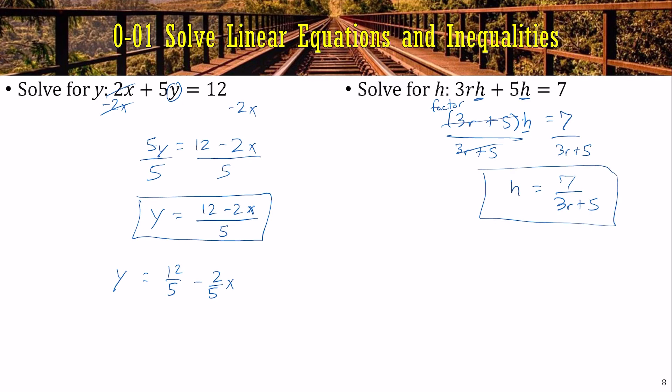That is not the same thing as 7 over 3r plus 7 over 5. That is not the same. You can split it with the same denominator, a common denominator. But if the denominators are different, you cannot split it.